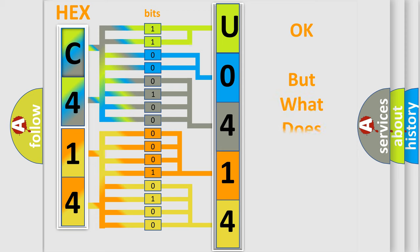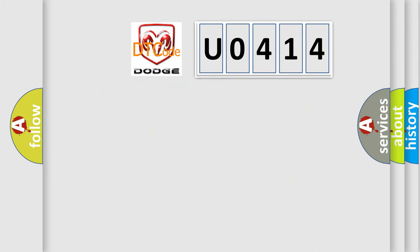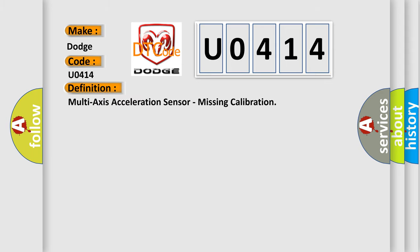We now know in what way the diagnostic tool translates the received information into a more comprehensible format. The number itself does not make sense to us if we cannot assign information about what it actually expresses. So, what does the diagnostic trouble code U0414 interpret specifically for Dodge car manufacturers? The basic definition is: Multi-axis acceleration sensor, missing calibration.